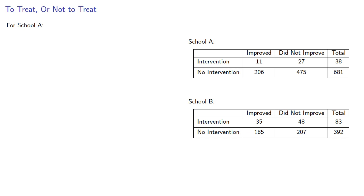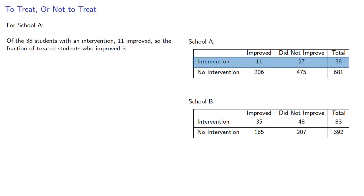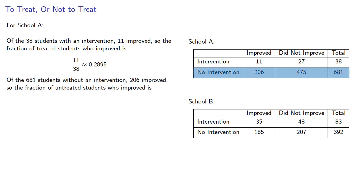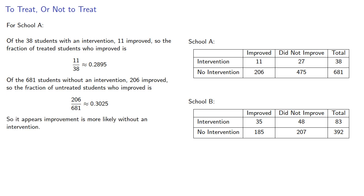Let's look at the schools separately. For school A, of the 38 students with an intervention, 11 improved. So the fraction of treated students who improved is a bit under 29%. Of the 681 students without an intervention, 206 improved. So the fraction of untreated students who improved is a bit over 30%. It appears improvement is more likely without an intervention, and so we would recommend no intervention for students at this school.